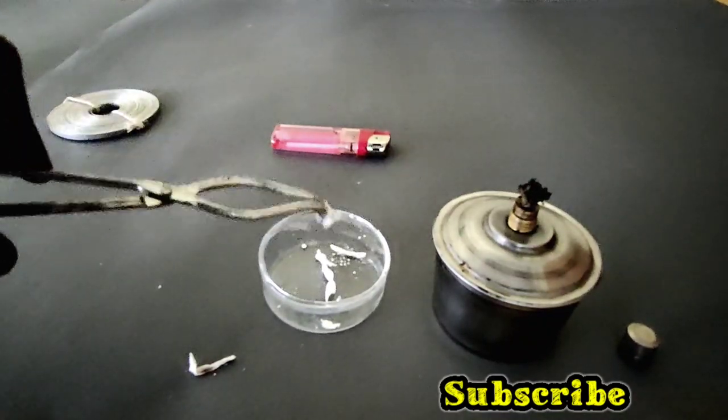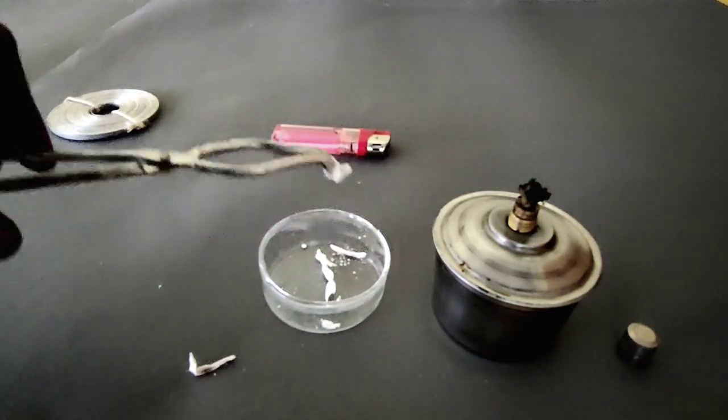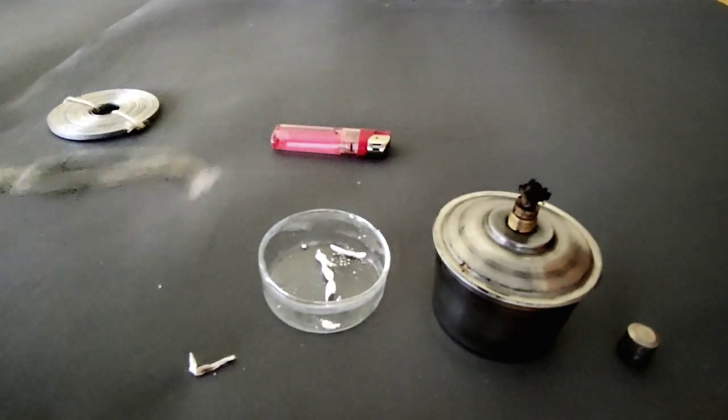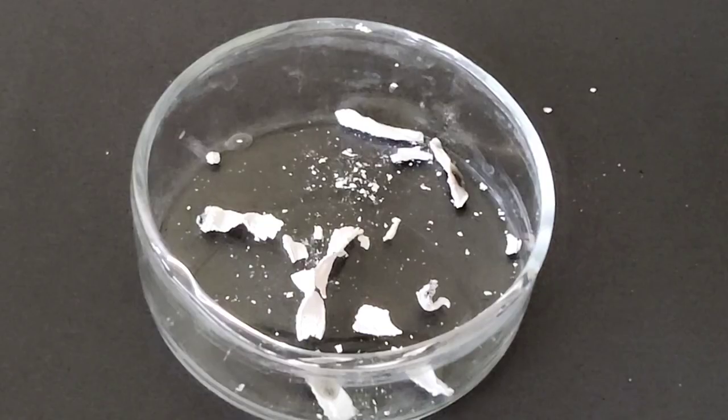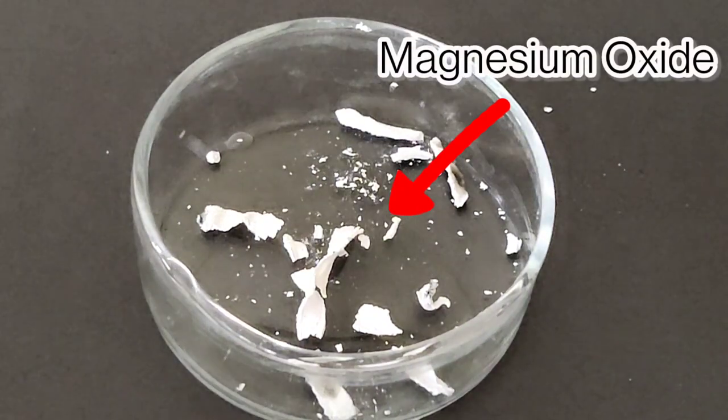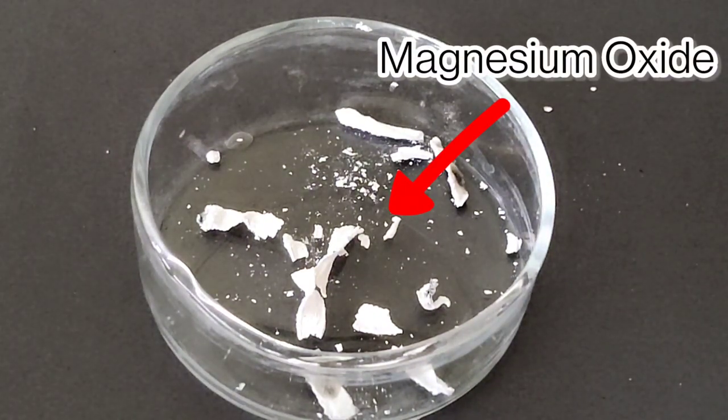In this reaction, magnesium and oxygen combine to form a new substance, magnesium oxide. We will see that closely in the petri dish.